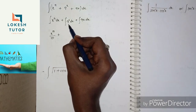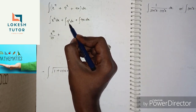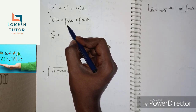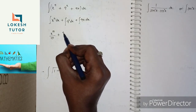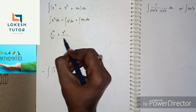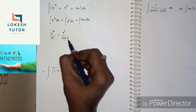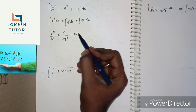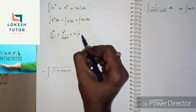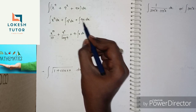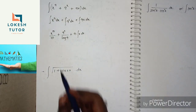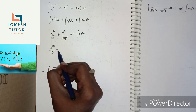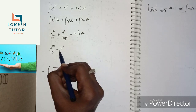For the second term, 9ˣ: the integration formula for aˣ is aˣ/log a. The differentiation of aˣ is aˣ·log a, so integration gives aˣ/log a. Therefore, integral of 9ˣ dx = 9ˣ/log 9.